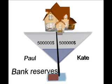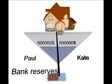The bank then expands its balance sheet on both sides with $500,000. Paul will get a $500,000 loan, which the bank registers as an asset, and Kate will get $500,000 in her deposit on the other side of the balance sheet, which the bank will register as a liability.